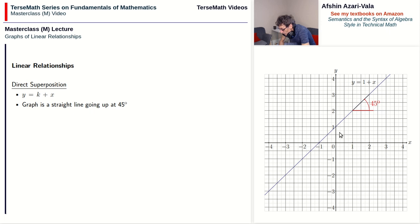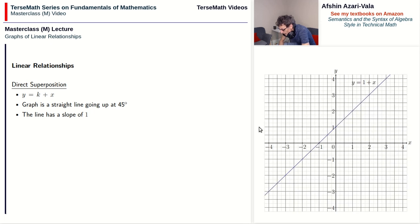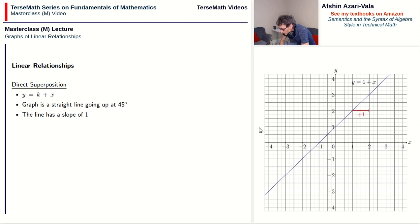If the units are not of the same size, the graph becomes either compressed or elongated, and the angle will not appear as 45 degrees. The slope of such a line is 1, which is the same as 1 over 1 — the 1 on top representing the change in y and the 1 on the bottom representing the change in x. So when x changes by 1 going up, y goes up by 1, which gives the 45-degree angle. This is exactly what direct superposition is about: both x and y increase and decrease by the same amounts.